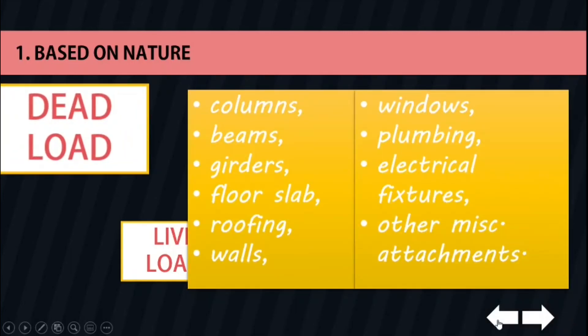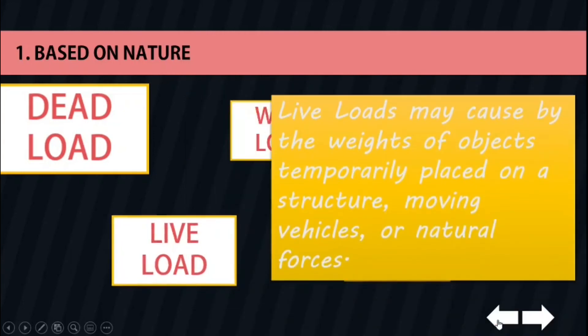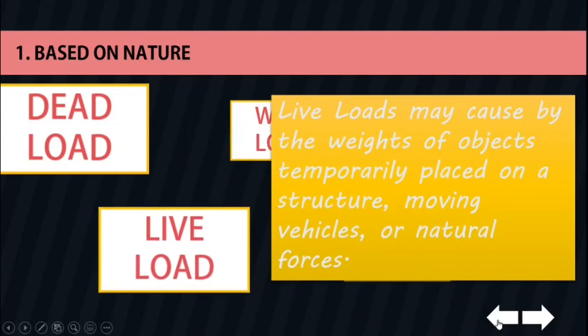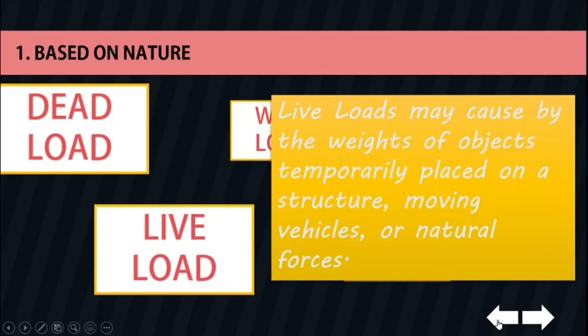Dead load consists of the weights of the various structural members and the weights of any objects that are permanently attached to the structure. For a building, the dead loads include the weights of the columns, beams, girders, floor slab, roofing, walls, windows, plumbing, electrical fixtures, and other miscellaneous attachments. Second is the live load. Live loads can vary both in their magnitude and location.